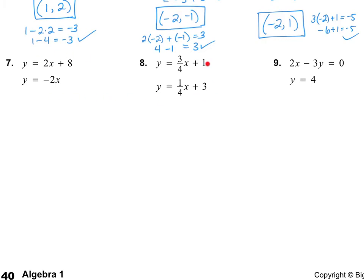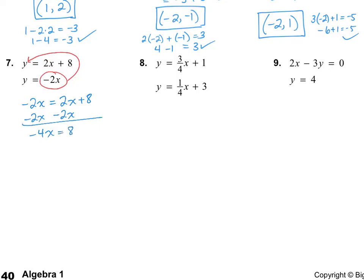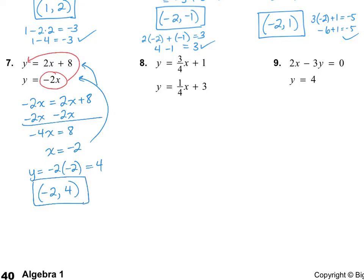Sometimes, like on number 7, you'll get both equations equaling y. That's not a problem — we still take one y expression and plug it in for y on the other equation. So that gives us negative 2x equals 2x plus 8. Subtracting 2x from both sides: negative 4x equals 8. Dividing by negative 4: x equals negative 2. Plugging into the second equation: y equals negative 2 times negative 2, which is positive 4. So the answer is (negative 2, 4). Remember to always write your answer in point form (x, y). Checking in the first equation: 4 equals 2 times negative 2 plus 8 — that works.